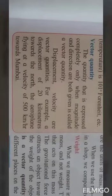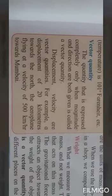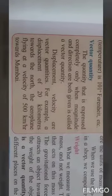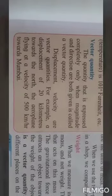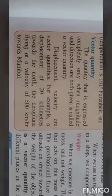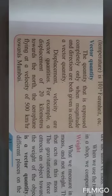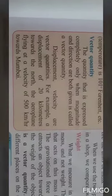The next type of physical quantity is vector quantity. The quantity that is expressed completely only when magnitude and direction are both given is called a vector quantity.